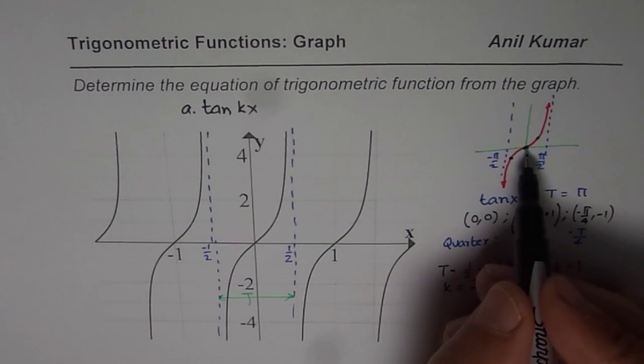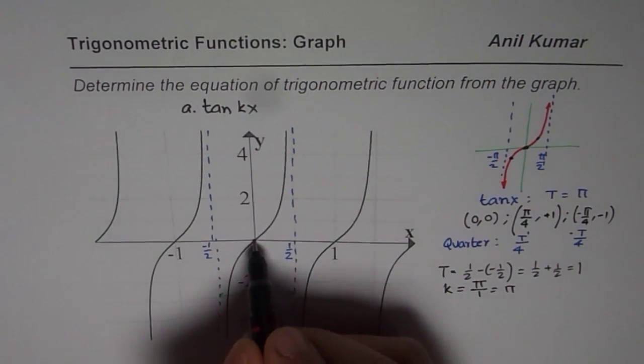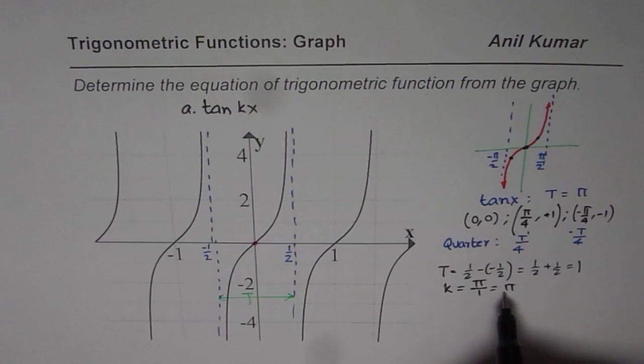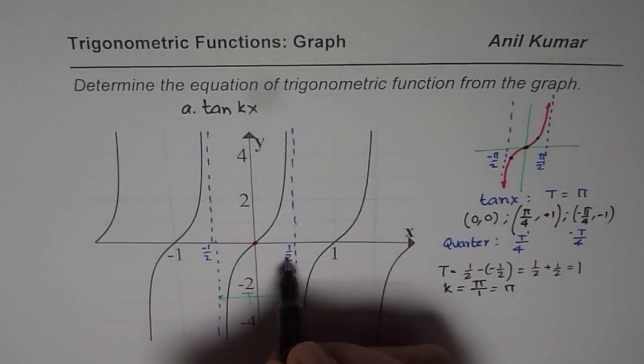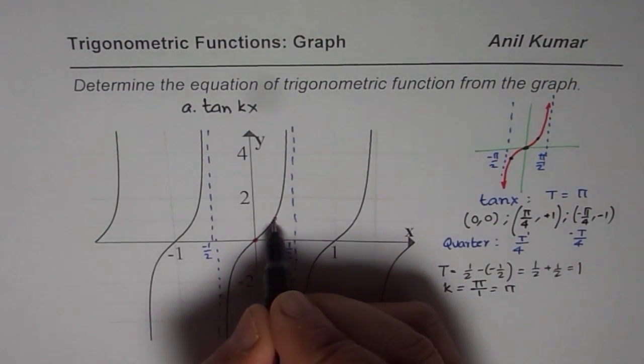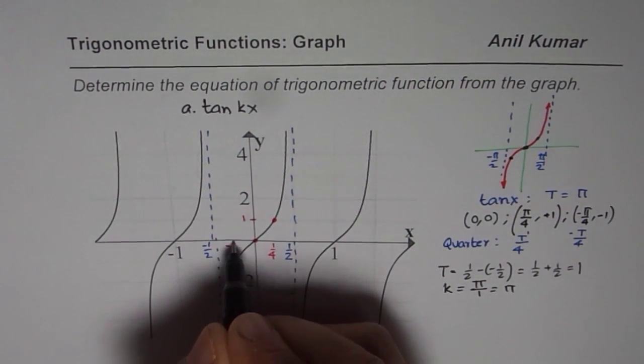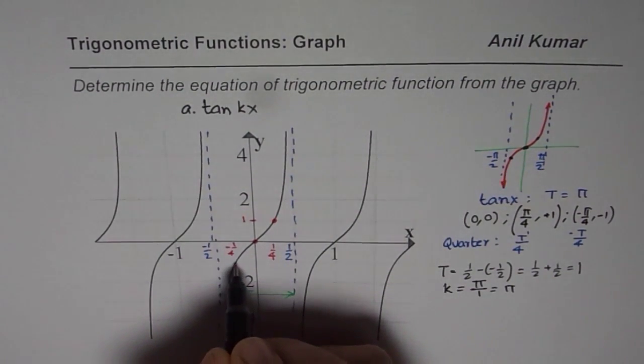The other points which I said should consider are the points at the origin and quarter of the cycle. Now if the time period is 1, quarter will be 1/4. So what is the value at 1/4? So if you see, the value at 1/4 is 1. And the value at minus 1/4 is actually minus 1.